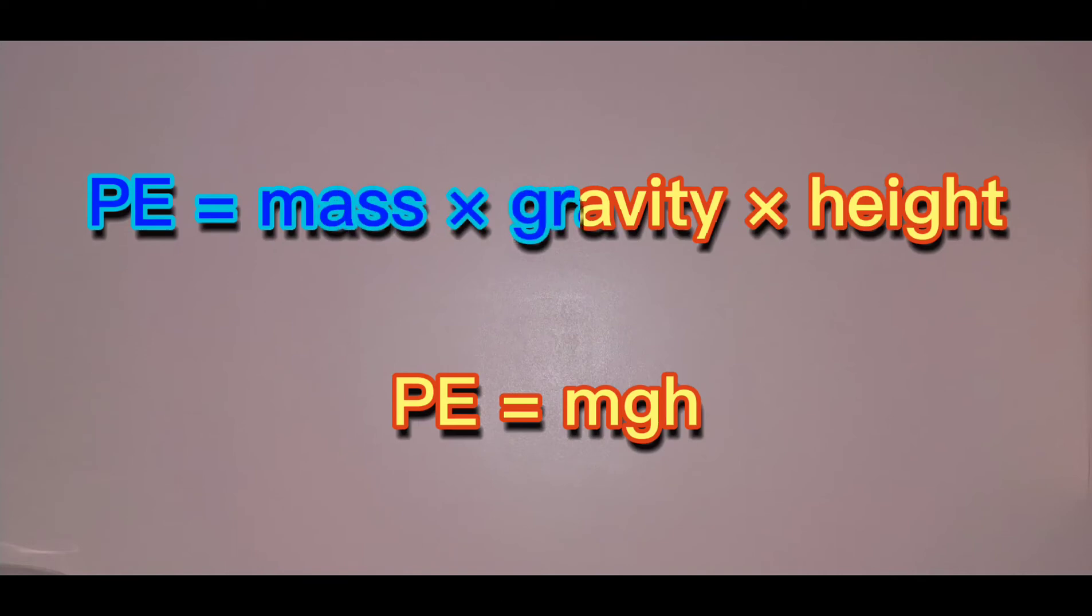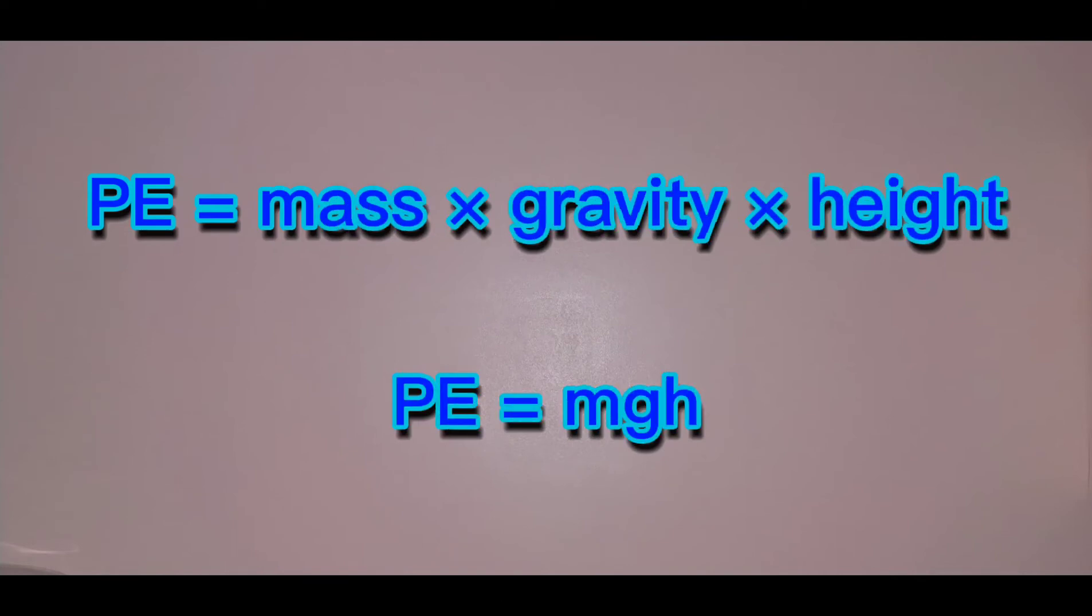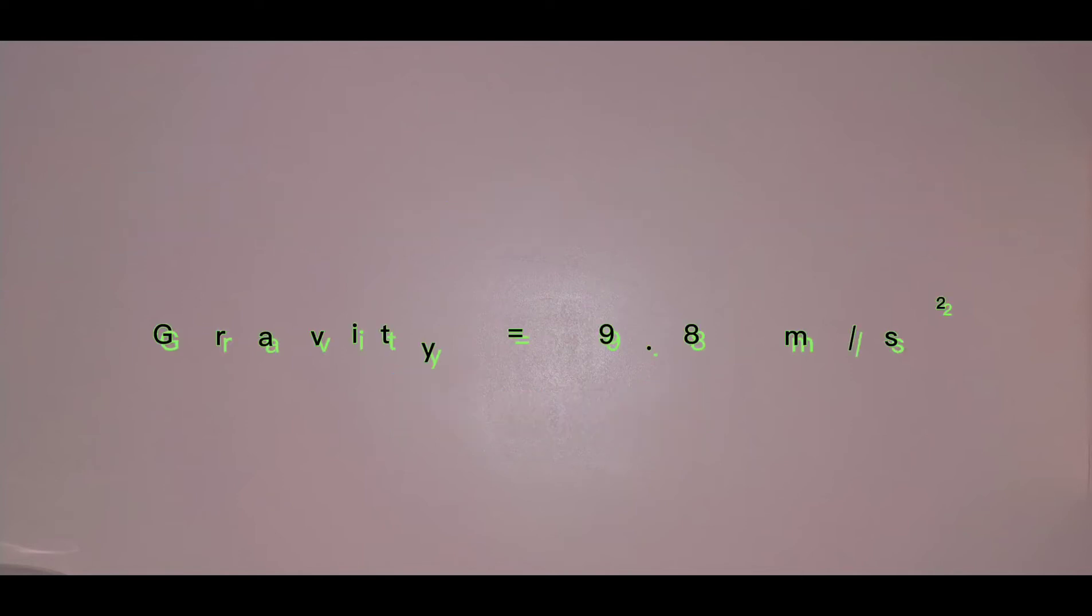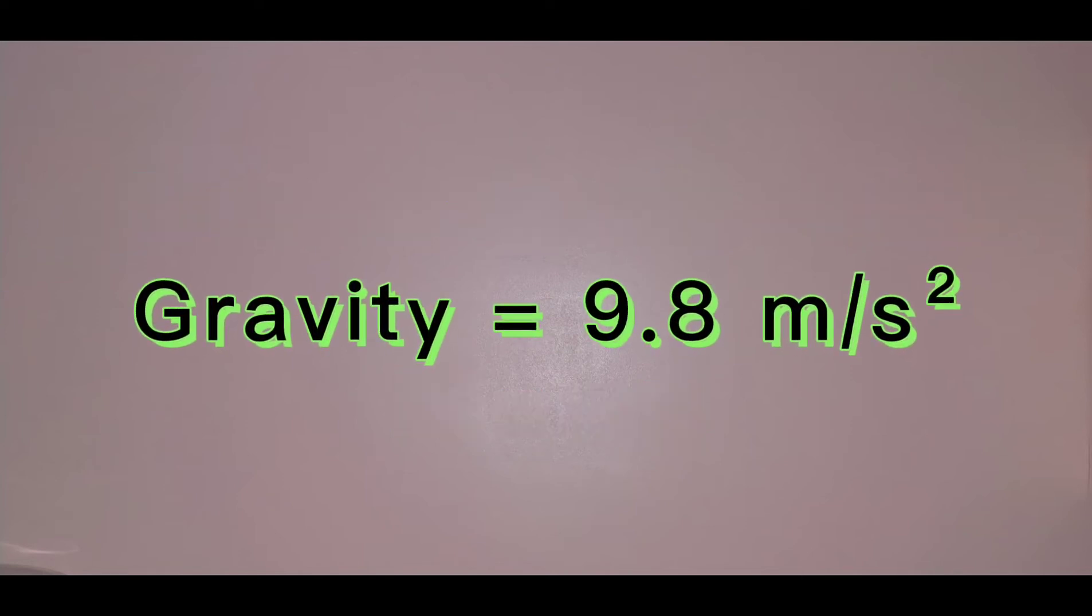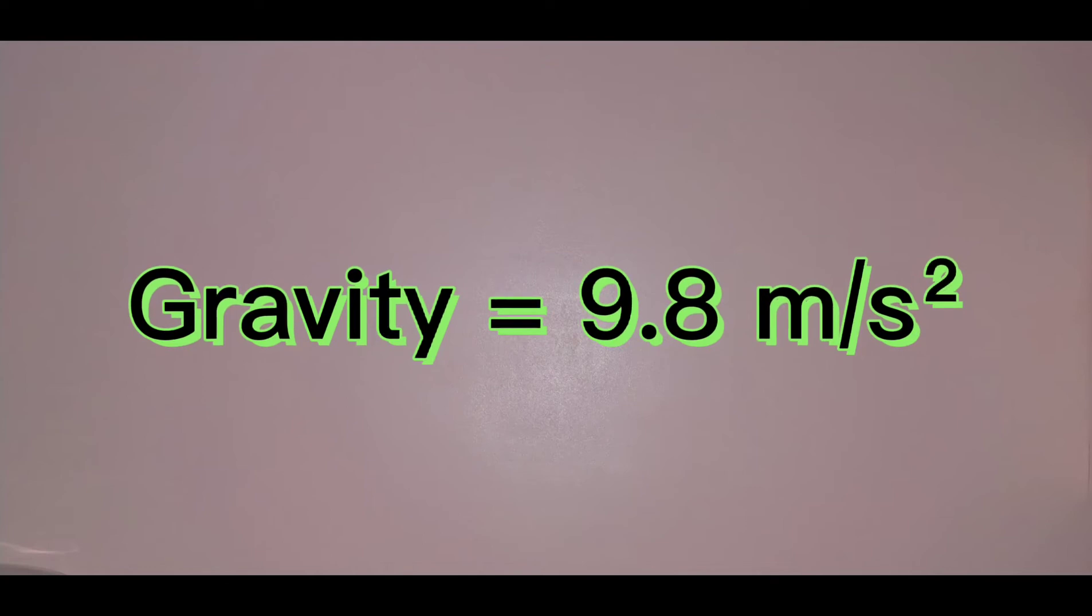The formula for gravitational potential energy is, potential energy equals mass times gravity times height. When solving this, always remember that the acceleration due to gravity is always 9.8 meters per second squared.